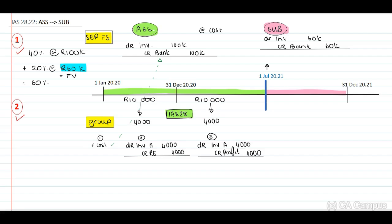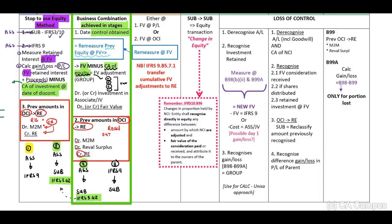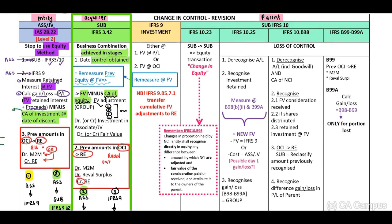Now, on 1 July 2021, the investor, entity A, purchased an additional 20%. What do we do now? From this date, this will now be a subsidiary, and we need to apply our principles of IFRS 3 and IFRS 10. What does IFRS 3 tell us to do? If we refer to IFRS 3, paragraph 42, it indicates to us, or to our summarized version, the date when control is obtained, re-measure your previous equity at fair value.